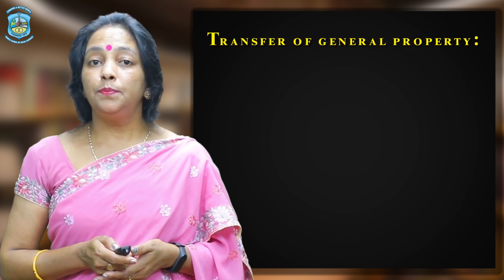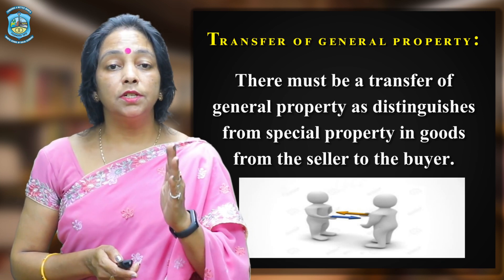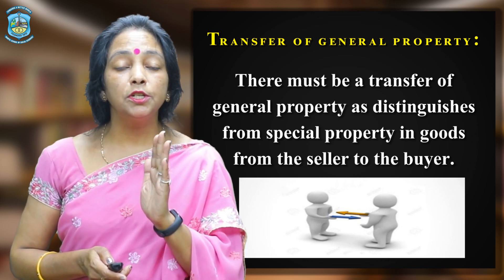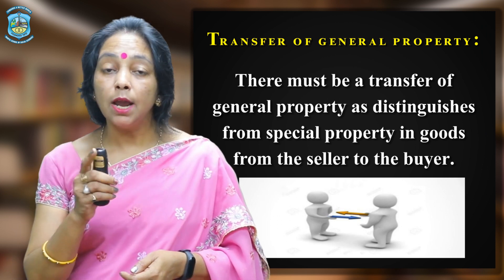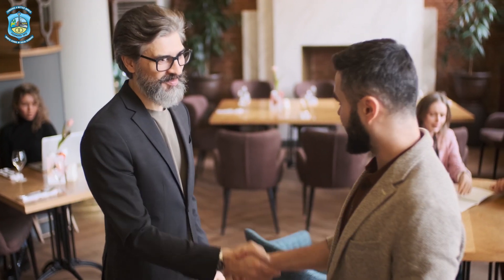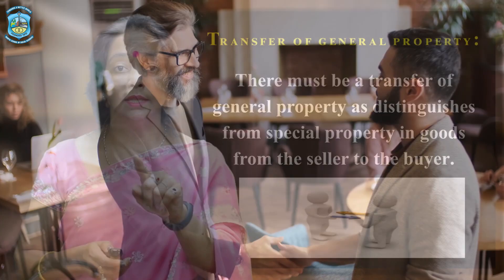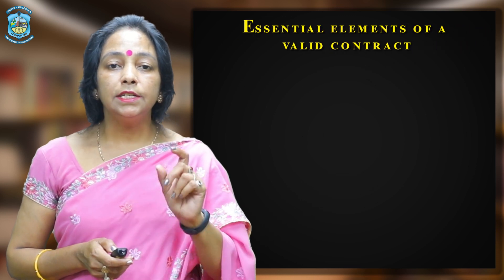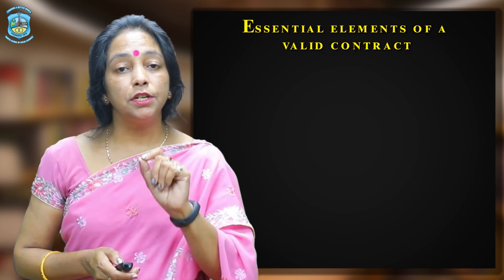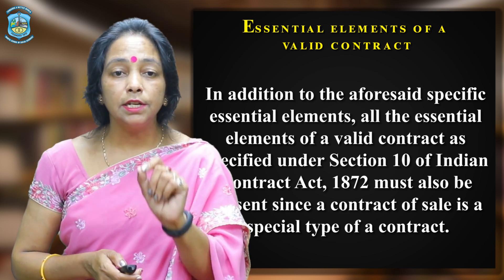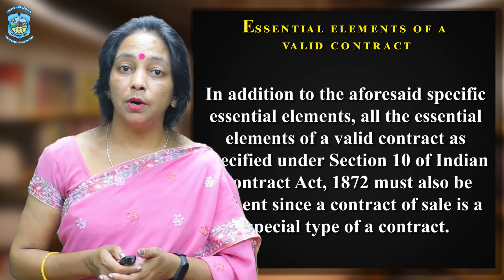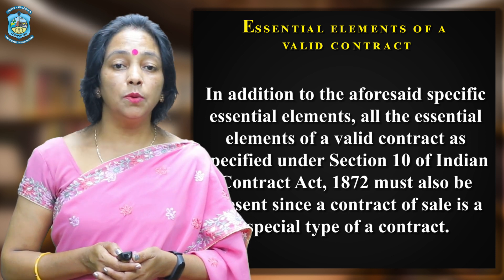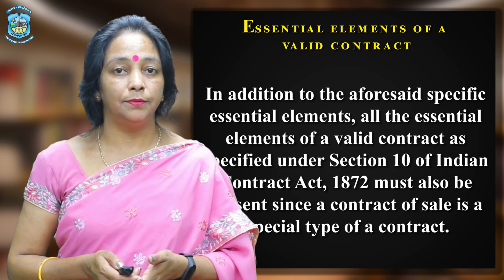The fourth element is transfer of general property. There must be a transfer of general property, as distinguished from special property in goods, from the seller to the buyer. For example, if A owns certain goods, he has general property in those goods. If he pledges them with B, then B has a special property in the goods. The fifth element is that all essential elements of a valid contract as specified under Section 10 of the Indian Contract Act 1872 must also be present, since a contract of sale is a special type of contract.